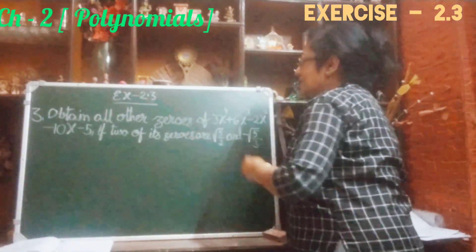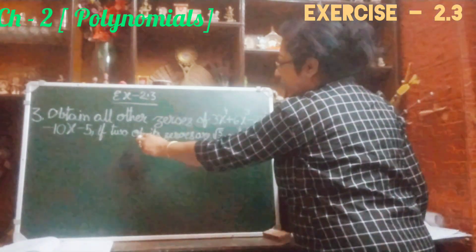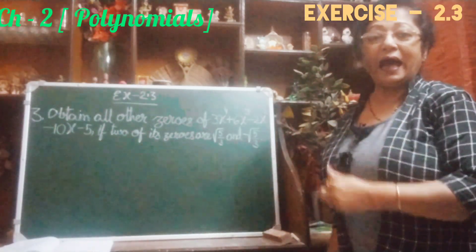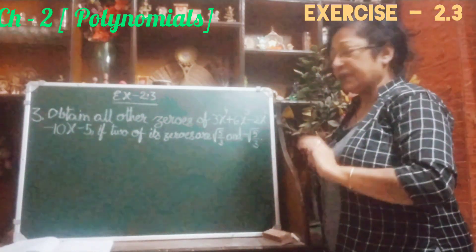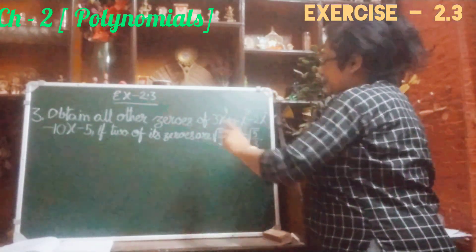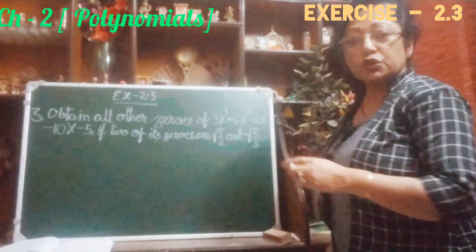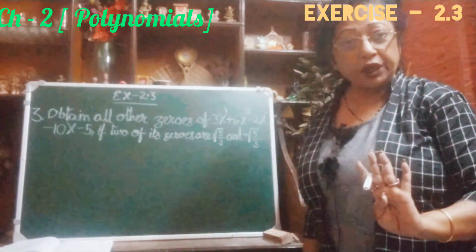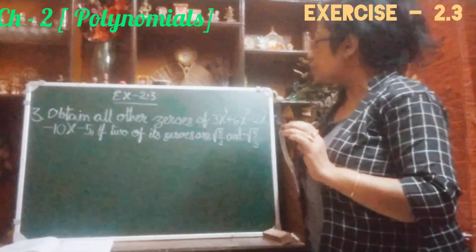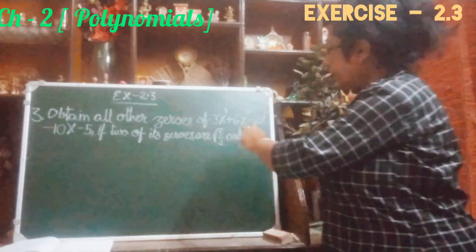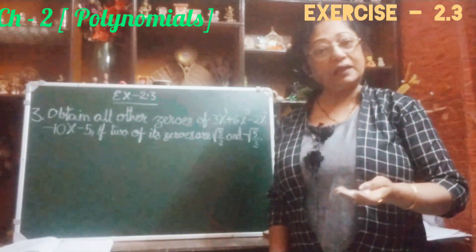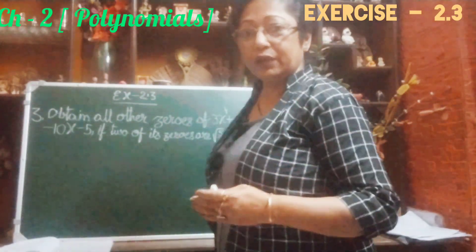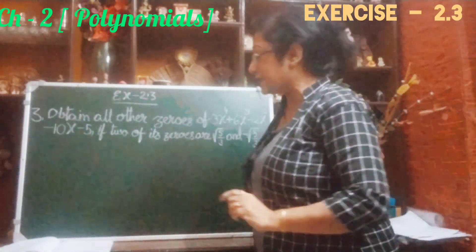Obtain all other zeros of this polynomial if two of its zeros are √(5/3) and -√(5/3). You see what is the highest power in this polynomial — that is 4, so the degree of this polynomial is 4. So there should be 4 zeros, or you can say roots, the values of x. Out of those four, they have given these two and we have to find the other two. So let us start. First we will start with a few steps — watch carefully, definitely you will understand it.